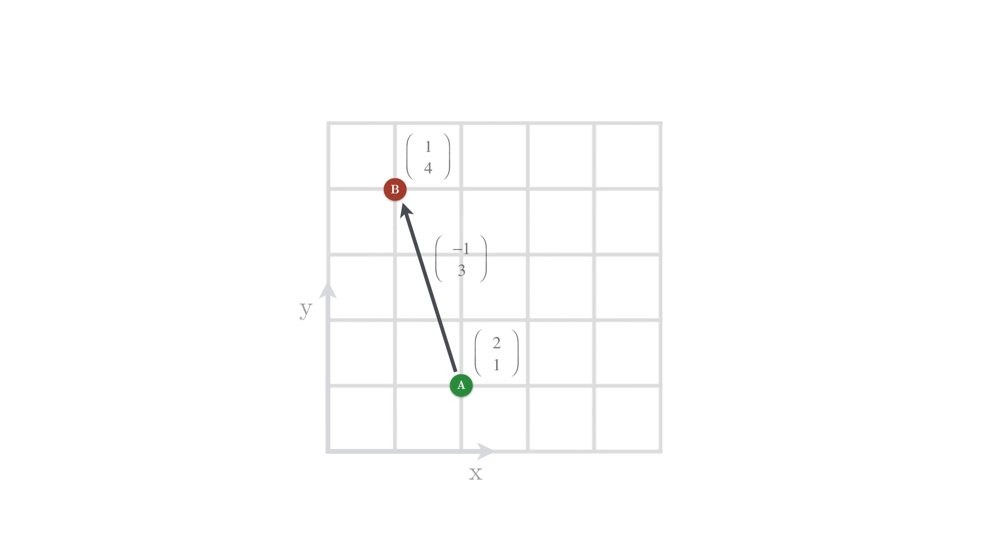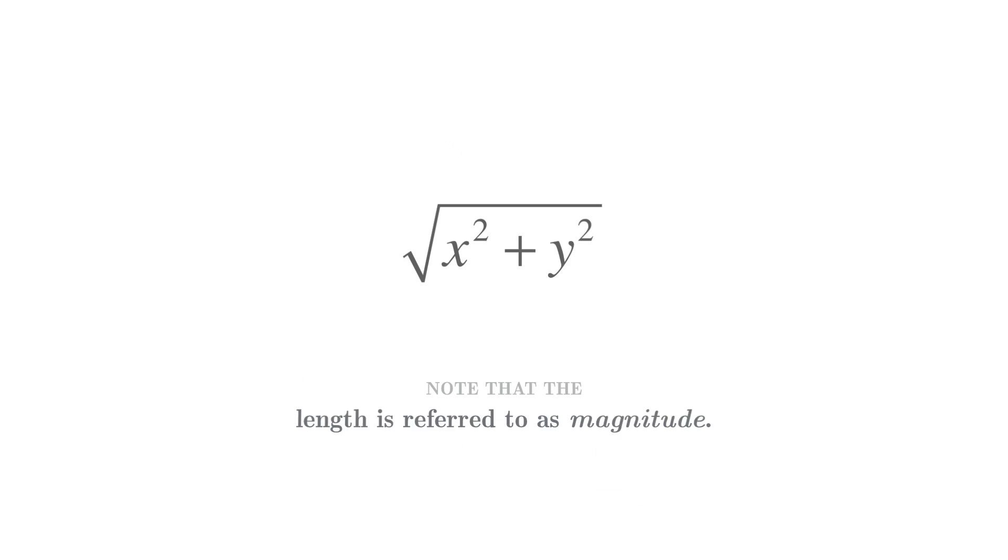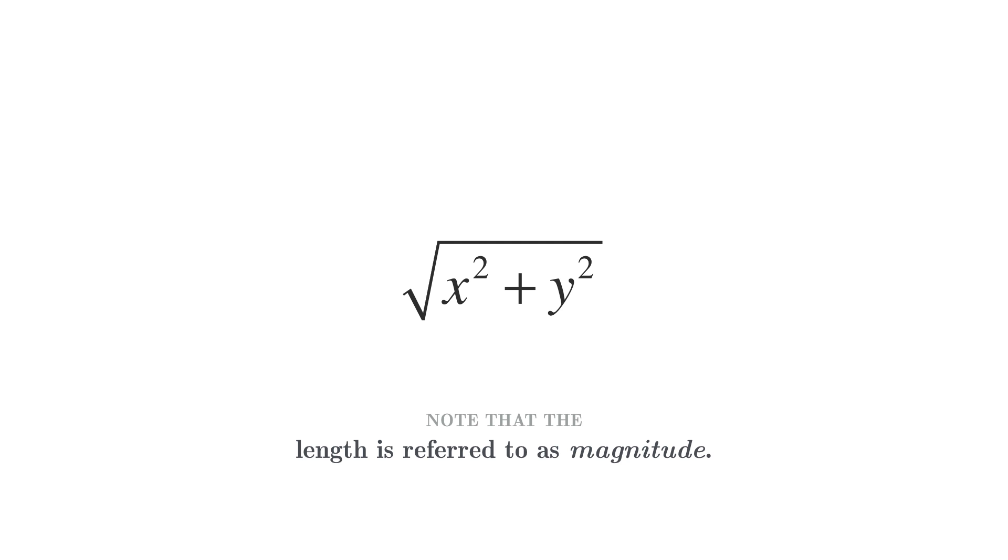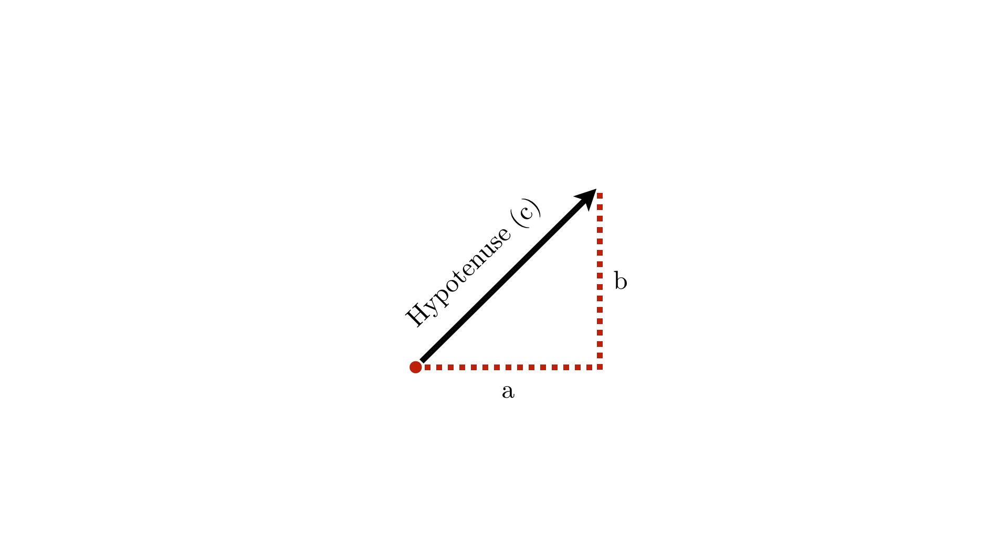That is, in fact, really easy. The length of a vector can be written as the square root of x squared plus y squared. Note that the length of a vector is referred to as the vector's magnitude. If you wonder why the length of a vector is defined using this particular formula, you can try to think of the vector as the hypotenuse of the triangle created by the vector coordinates, and then use Pythagoras' theorem to calculate the length of that side. But you could of course just use the formula as is.